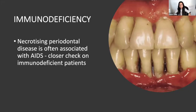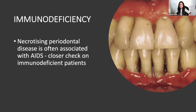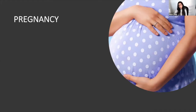Other medical conditions to look out for: necrotizing periodontal diseases related to AIDS or any immunodeficiency — look out for pseudomembrane, punched-out papillae, and halitosis. It may not be as obvious now because drugs are so well controlled. Also include pregnancy in your medical history. Pregnant patients often get worried about having treatment, but it's important to discuss.